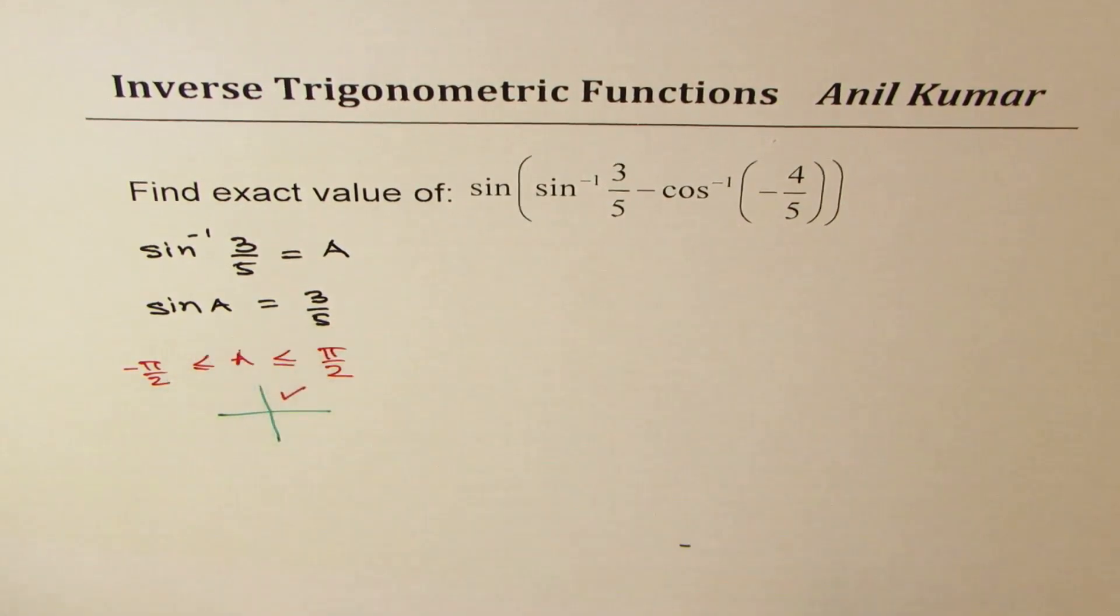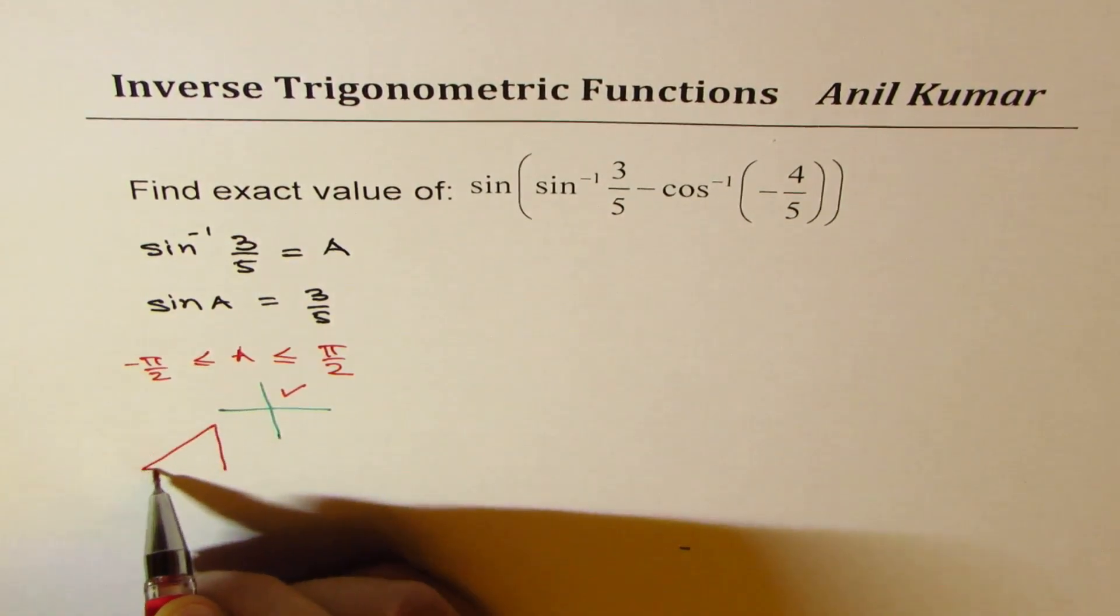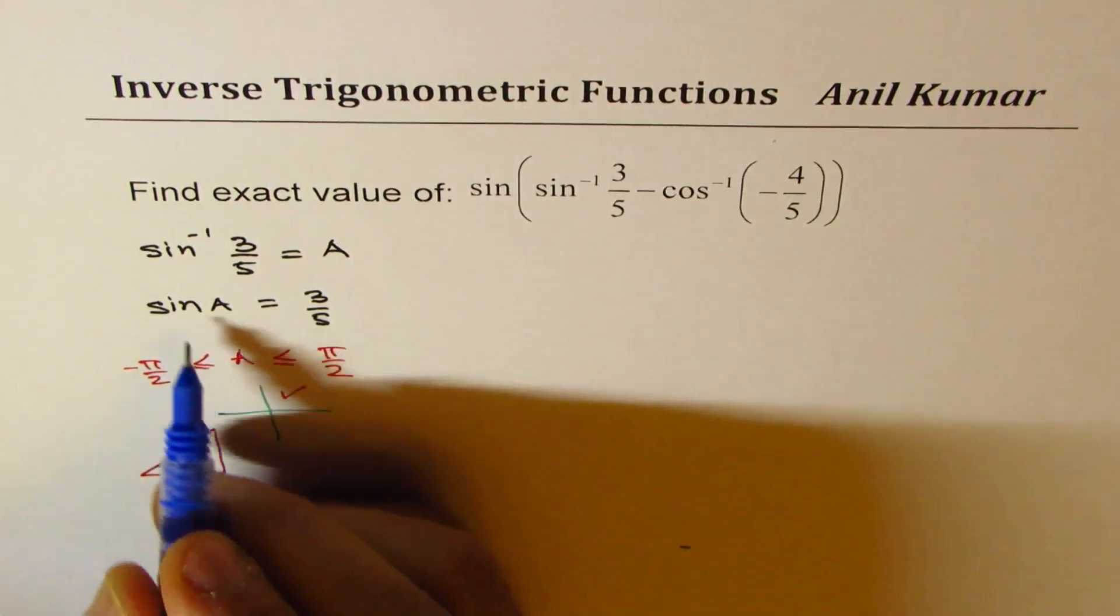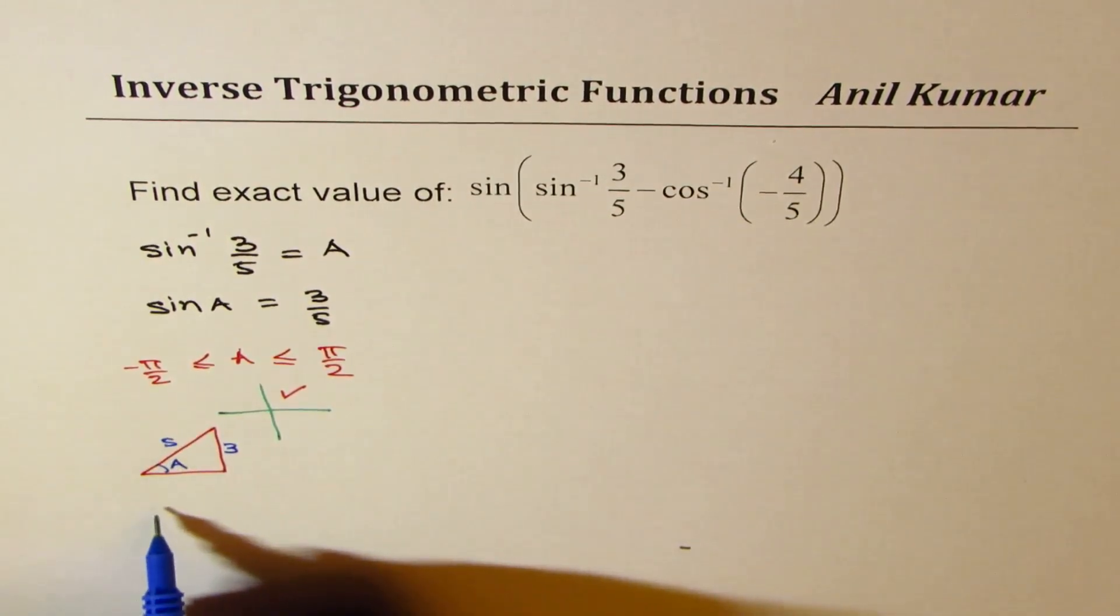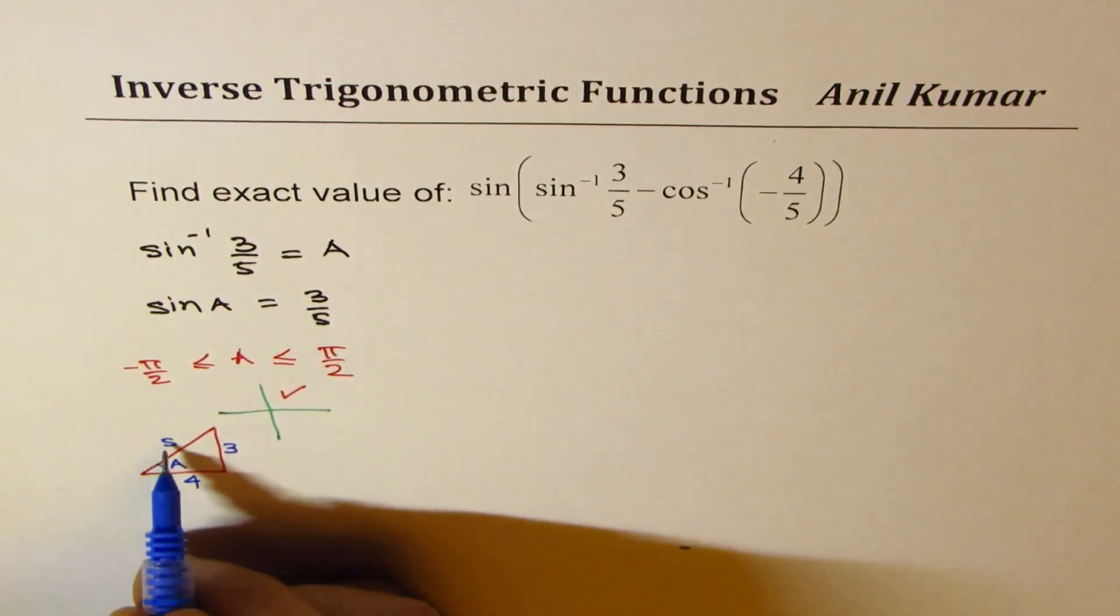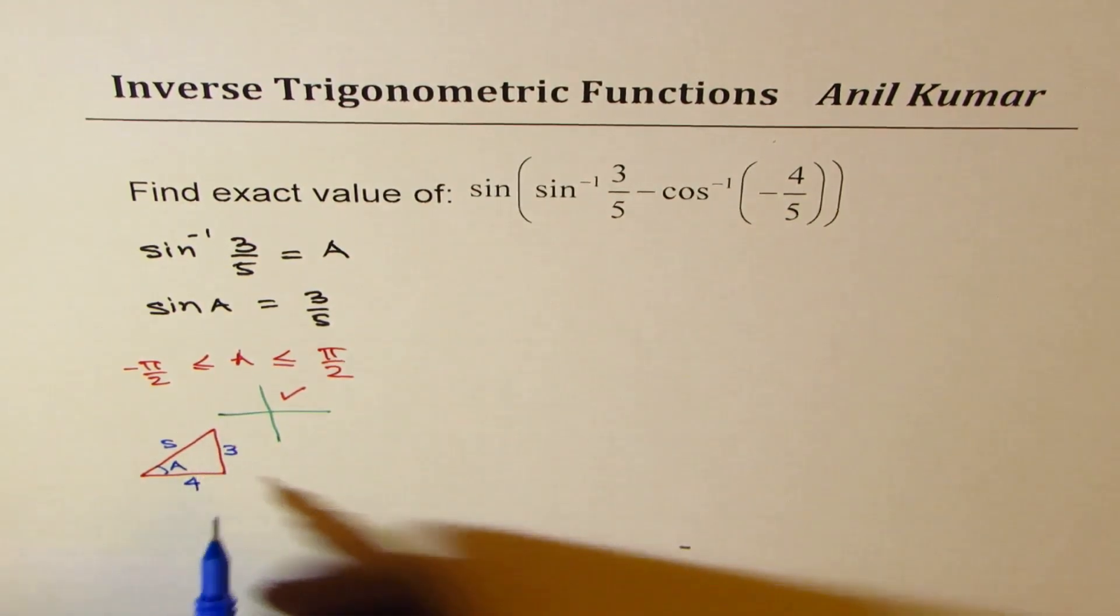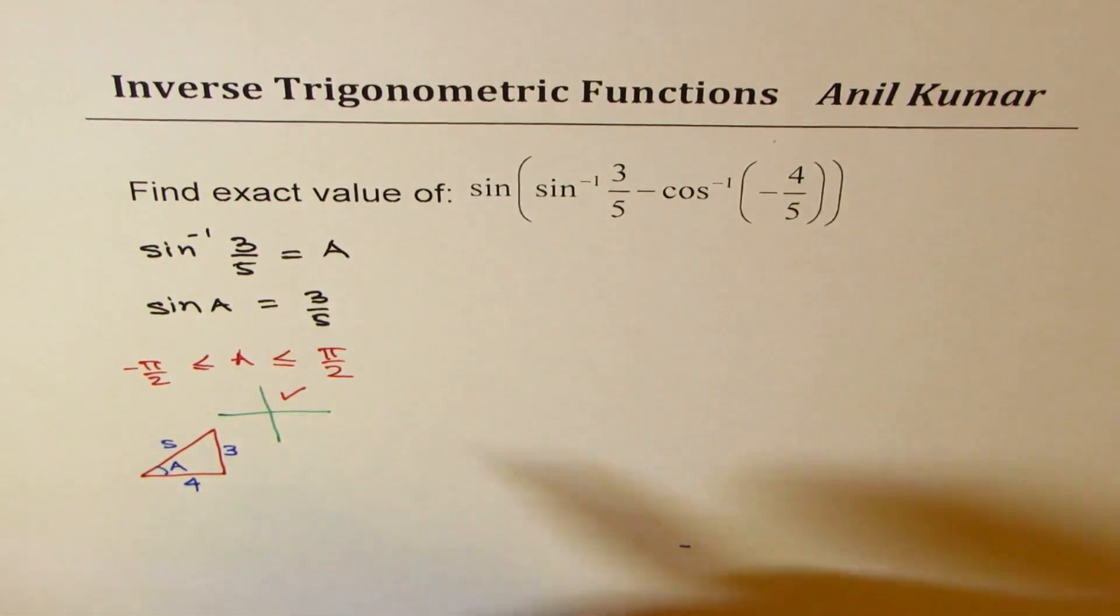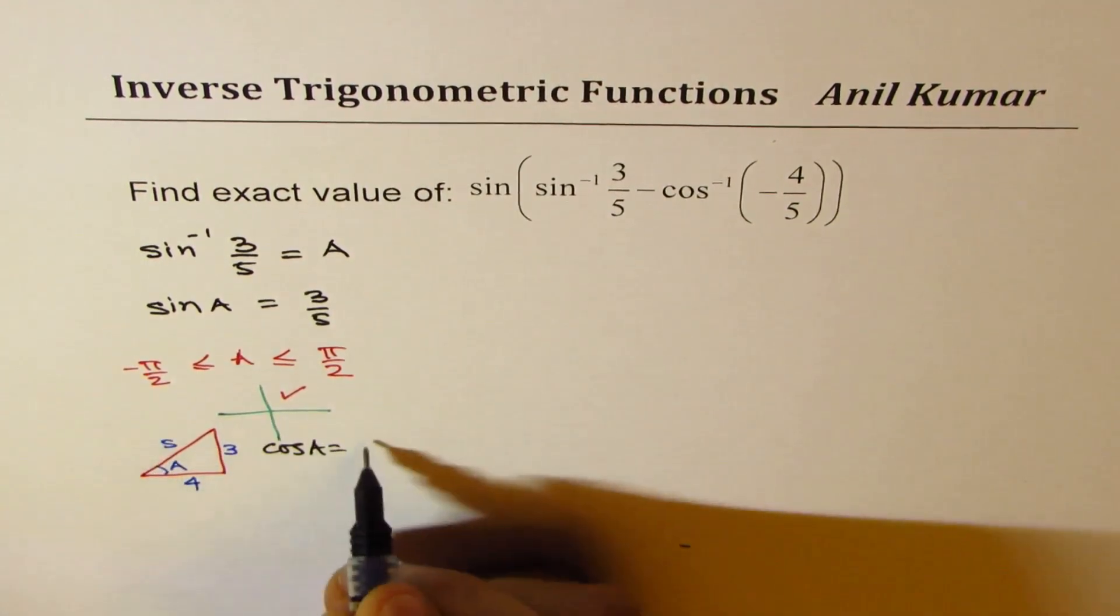Now, we can find what cos A is by making our triangle with angle A. So, angle A with sine A as 3 over 5 means opposite over hypotenuse is given to us. Adjacent side will be 5 square minus 3 square square root. So, the triangle is 3, 4, 5 and that gives you the value of cos A. So, the cos A value is equals to 4 over 5.